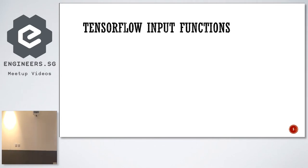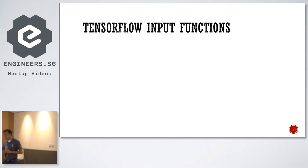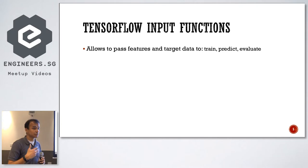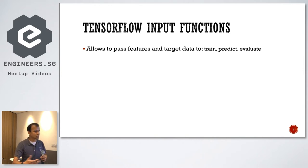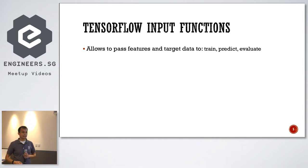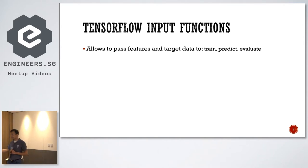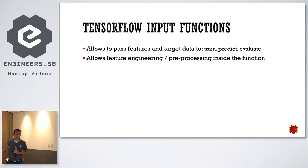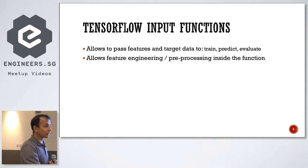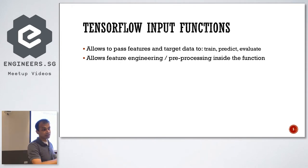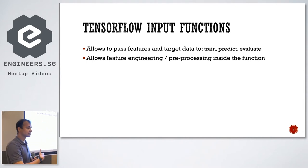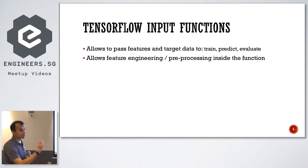I'll introduce TensorFlow input functions. Input functions allow you to pass features and target data — basically get the train, predict, and evaluate pipeline directly in. They also allow you to do feature engineering: if you have data and want to preprocess it — say, drop NANs or convert strings to lowercase — the input function lets you do that preprocessing inside the function.